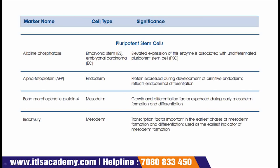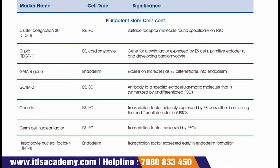The next marker is brachyury, which is again an important marker for the mesoderm. Brachyury is a transcription factor important in the earliest phase of mesoderm formation and differentiation, and is used as the earliest indicator of mesoderm formation. The next pluripotent stem cell marker is CD30, a very important marker used for embryonic stem cells as well as embryonic carcinoma cells. CD30 is a surface receptor molecule found specifically on pluripotent stem cells.